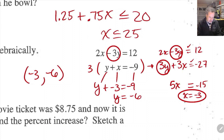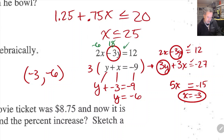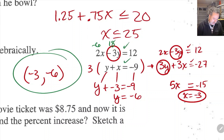If I plug those in to check: 2 times negative 3 is negative 6, and negative 3 times negative 6 is 18. 18 minus 6 is 12 — it works in the first equation. And negative 3 plus negative 6 gives negative 9, so it works in the second equation as well. This is definitely my answer.